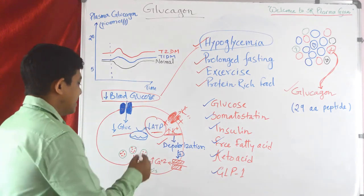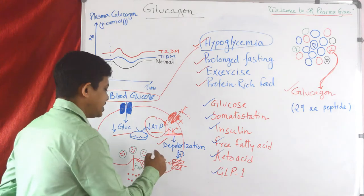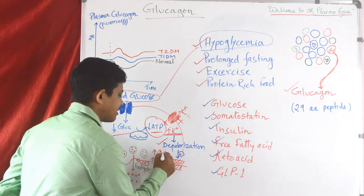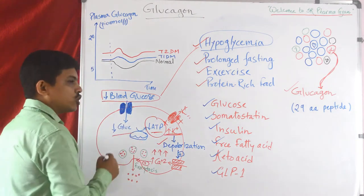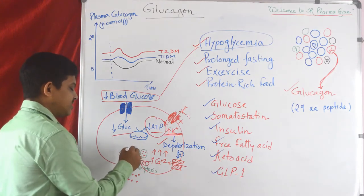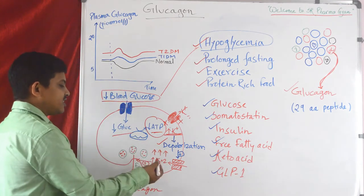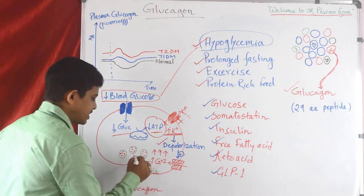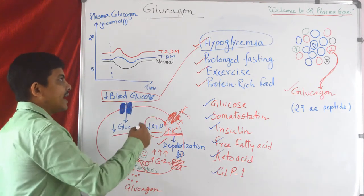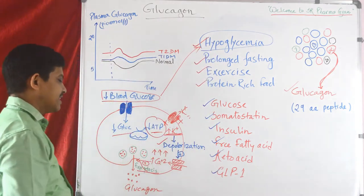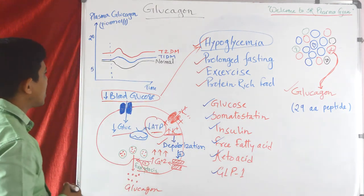Due to depolarization, calcium enters the cell through opening of calcium channels. Intracellular calcium level increases, and this calcium causes exocytosis of glucagon stored in granules. This is the process through which glucagon is released during hypoglycemia — this is the mechanism of glucagon release.